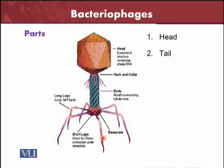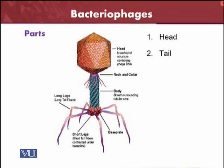You can see here the base plates. Most of the structure consists of the head and tail. They consist of the head, its tail, and short legs, as well as the neck and collar. The head is an icosahedral structure containing the phage DNA. The phage DNA is present inside its head. We will see in detail how it replicates and how it causes disease.